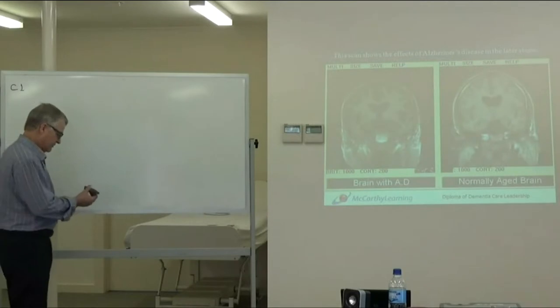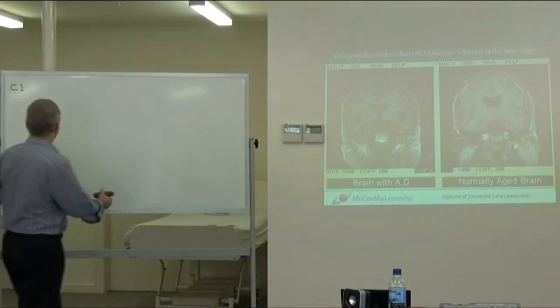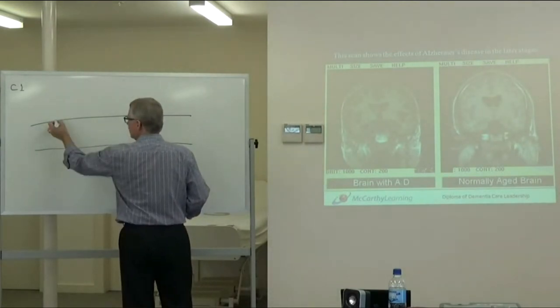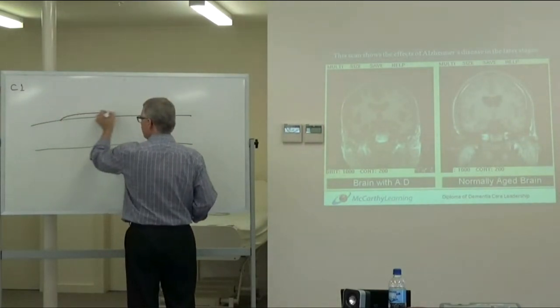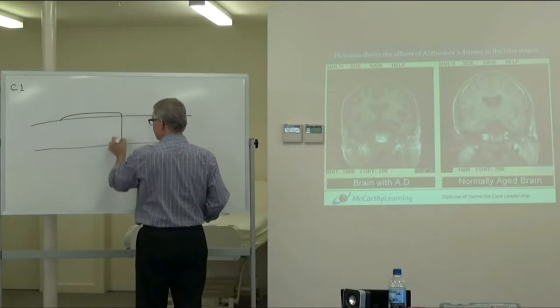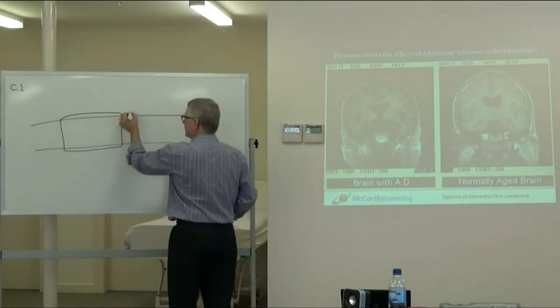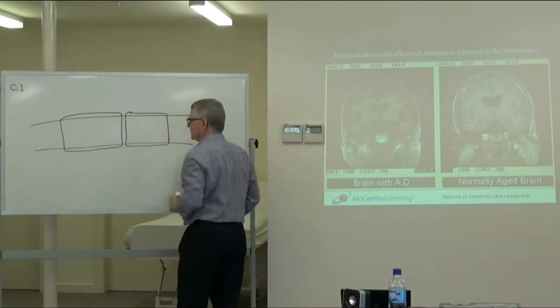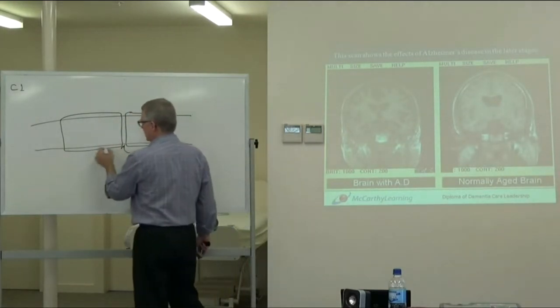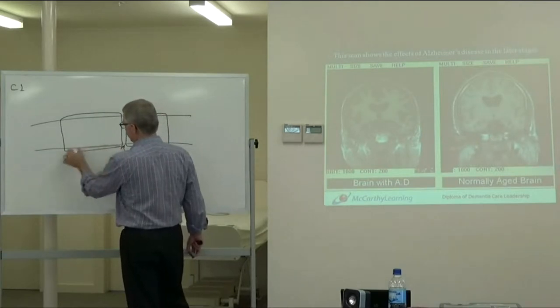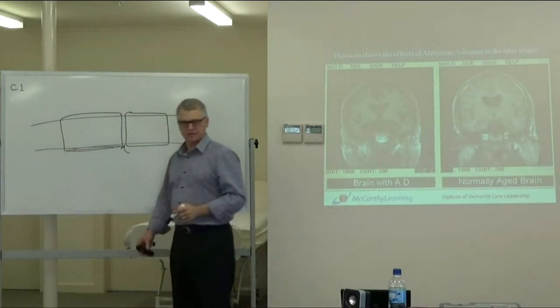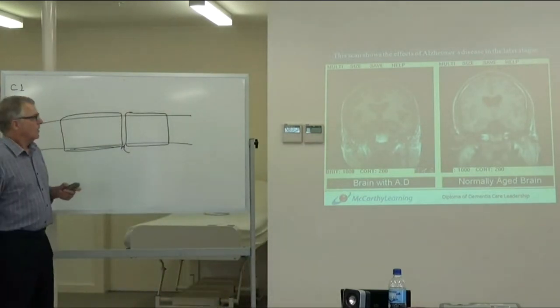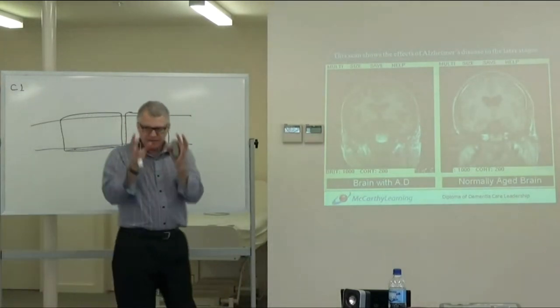The myelin sheath is that cover over the axon, and it's made up of little portions. The axon will be along here, and the myelin sheath will be in sections with gaps between them. This fatty tissue protects the flow. That's why you have the white matter and the grey matter.